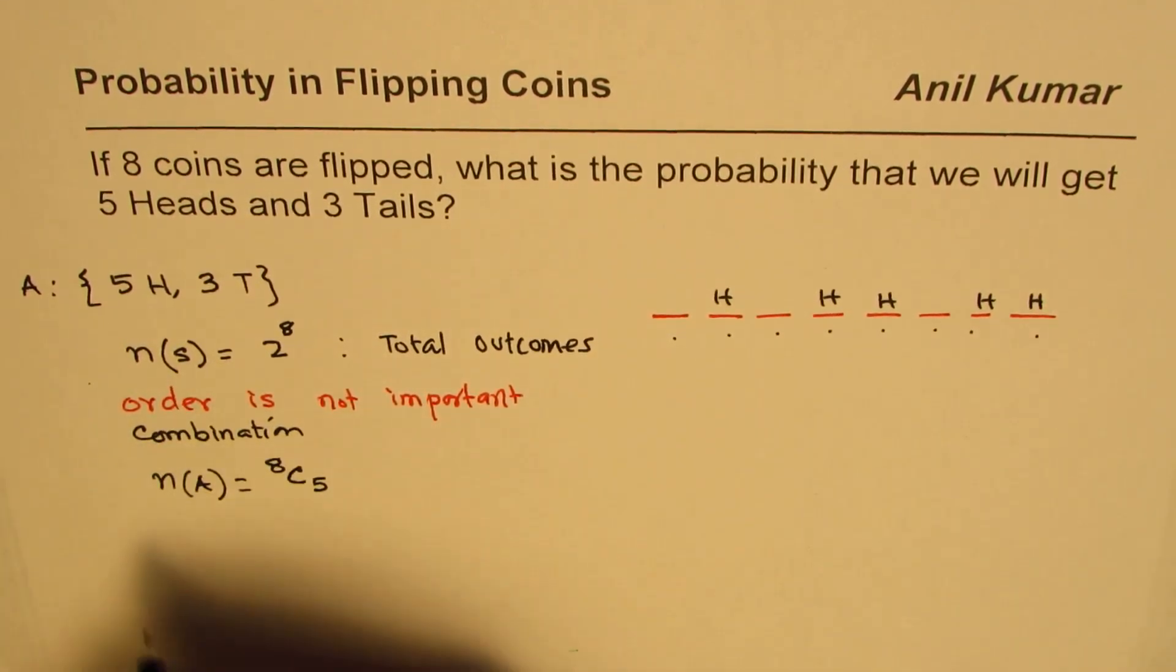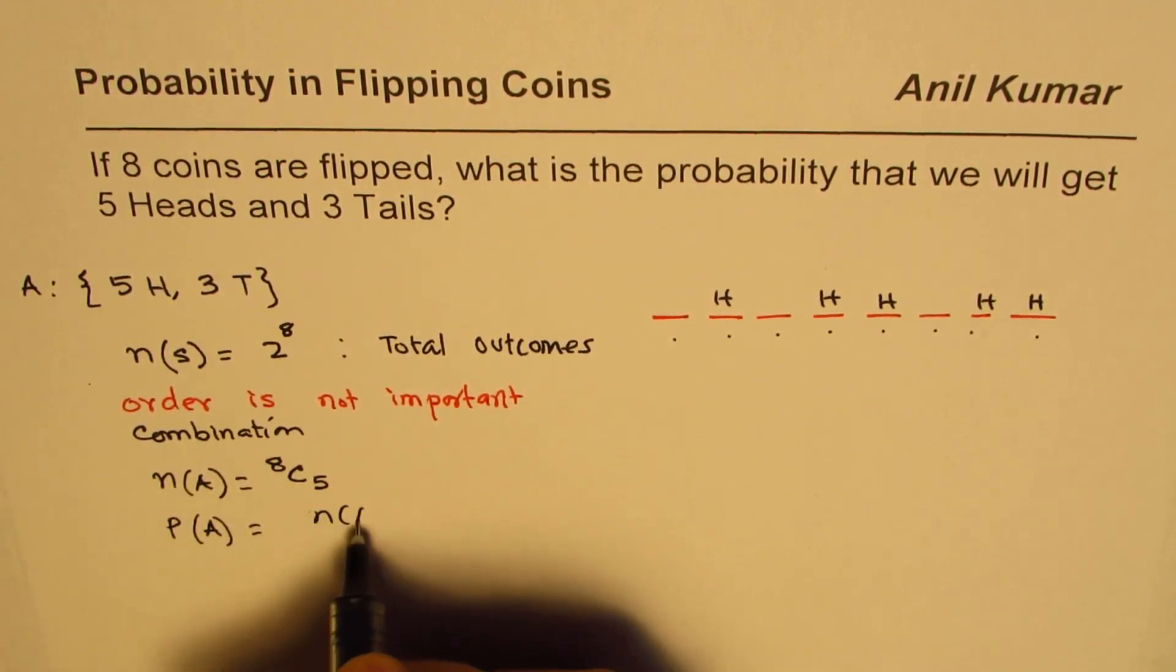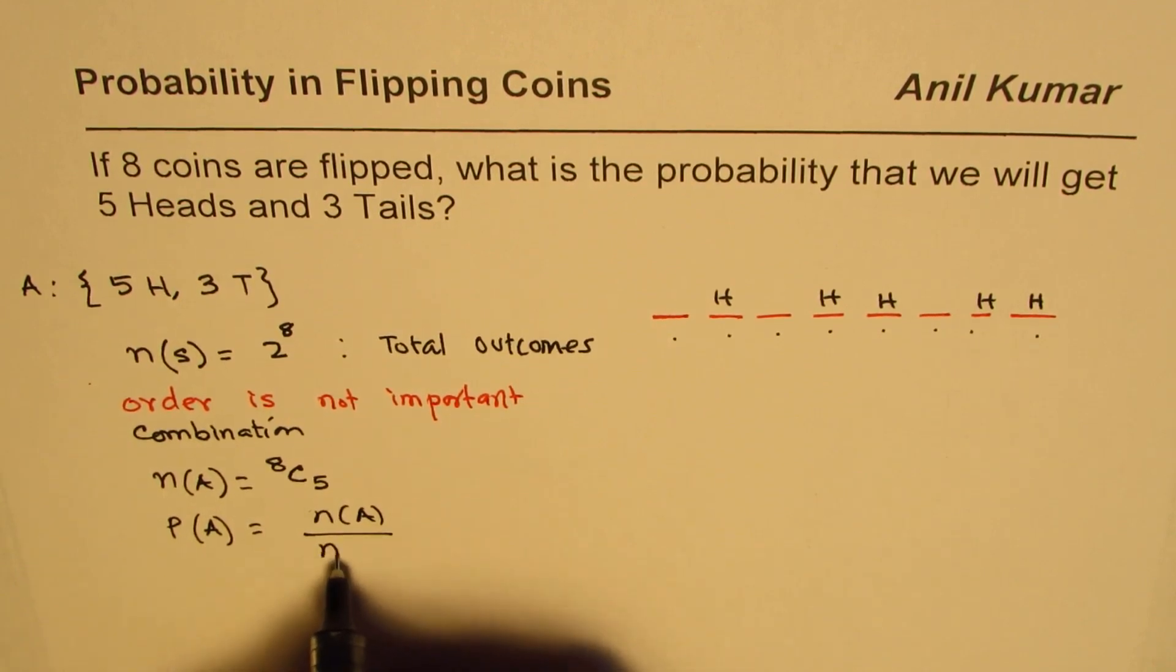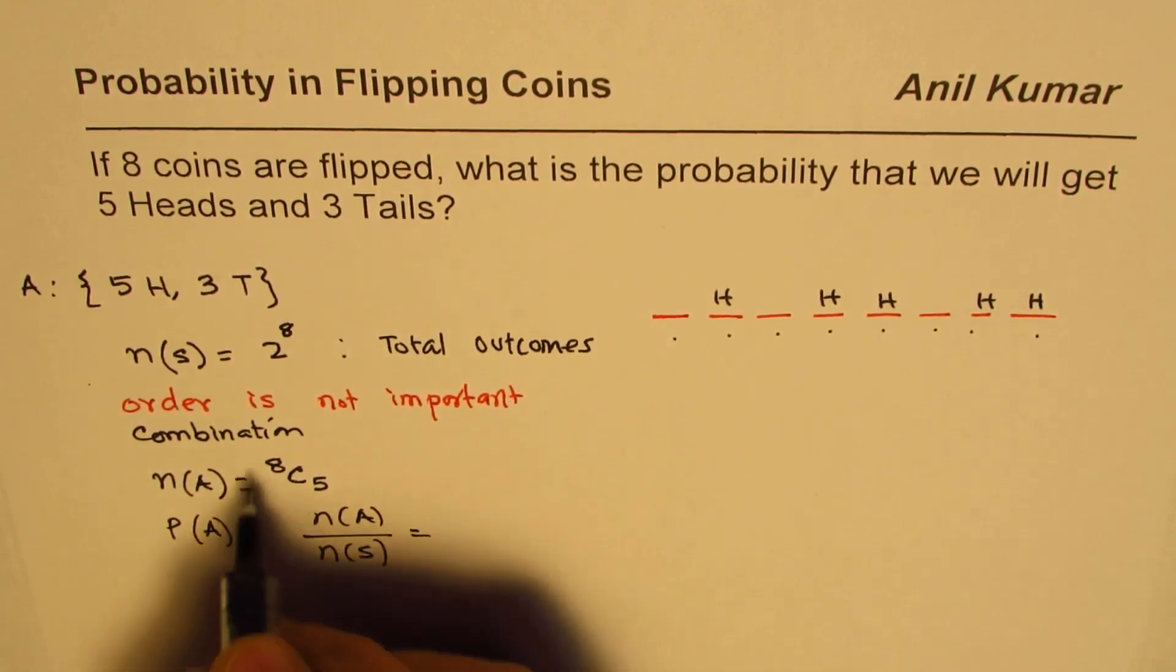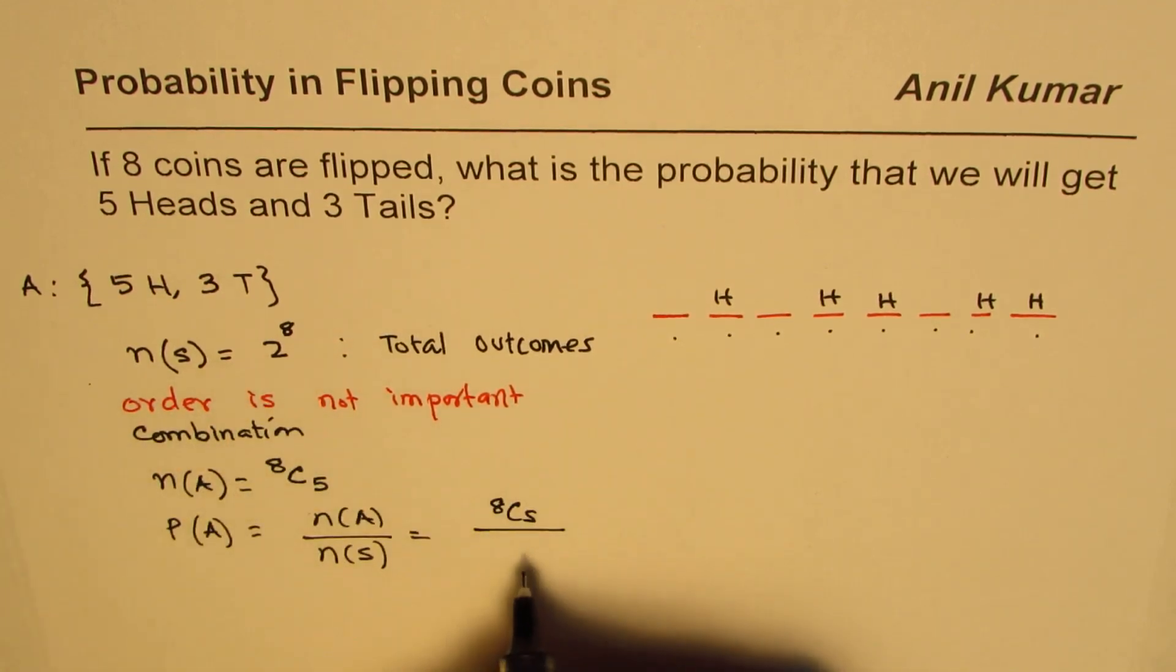Once you know that, then the probability is ratio of these two. So favorable over total number of options. So favorable is 8C5 and total number of options are 2 to the power of 8. So that gives you the solution.